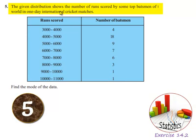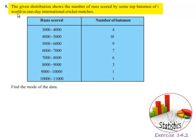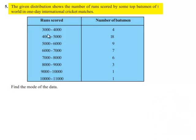The given distribution shows the number of runs scored by some top batsmen of the world in one day international cricket matches. Runs scored were given as group data and number of batsmen as frequencies. They have asked find the mode of the data.